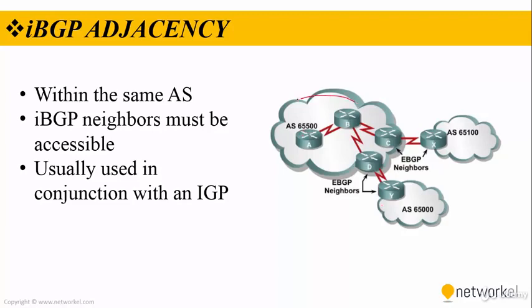We can make an IBGP peering between, for example, routers A and B as well as C. To provide an IBGP peering between A and C, they should be able to reach each other. That means we can use OSPF, EIGRP, or static routes. The only thing we need to focus on is that these routers should reach each other before exchanging IBGP routing updates.